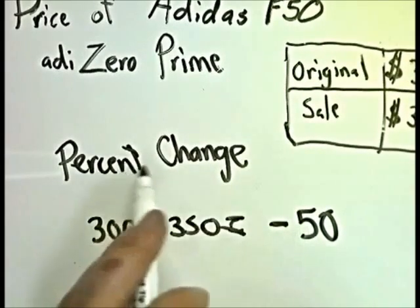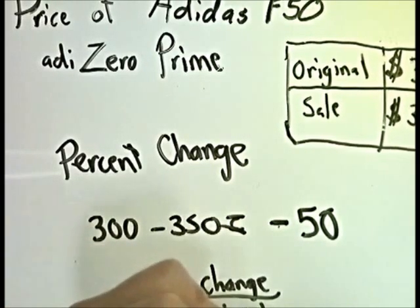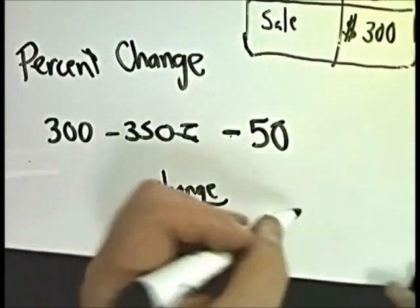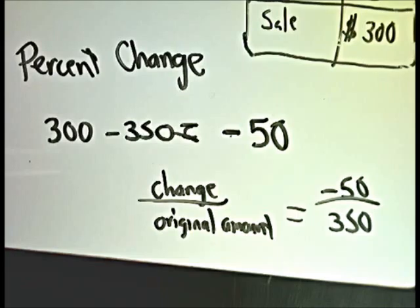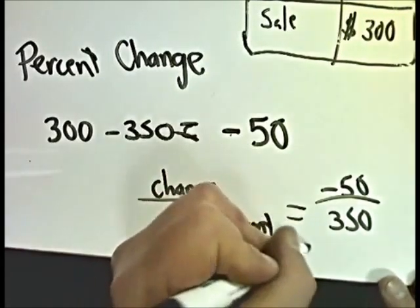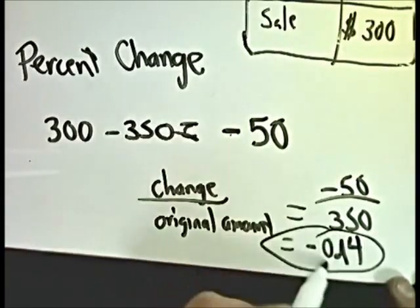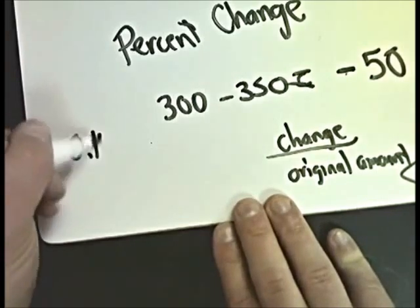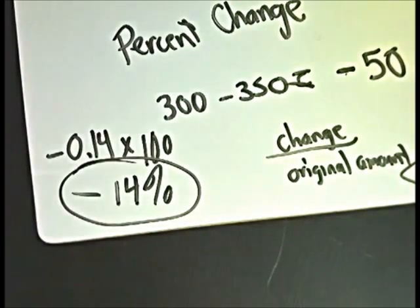In order to do the percent change, we take the total change and divide by the original amount. So I do negative 50 divided by 350, and I get negative 0.14. I need to convert this to a percent, so I multiply by 100, and that gives me a decrease of 14%. It doesn't seem like a lot, but when you think about fifty dollars, that's kind of a lot of money. So percentages are relative, obviously.